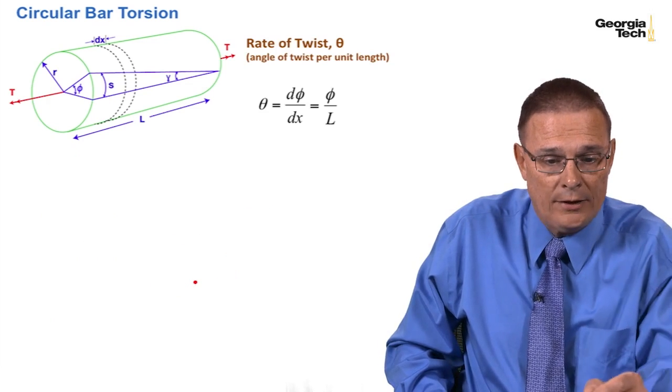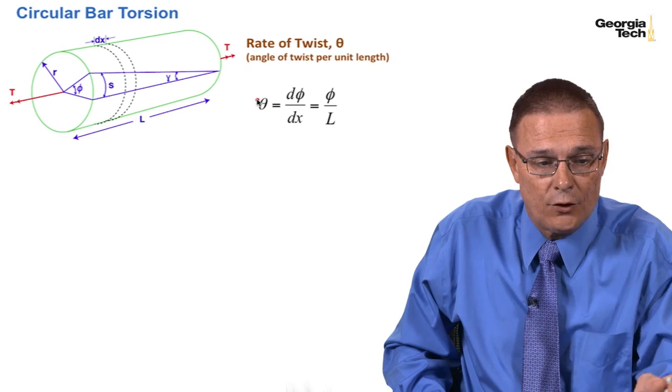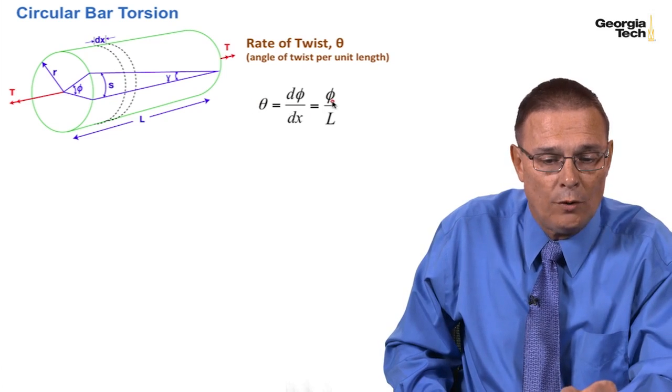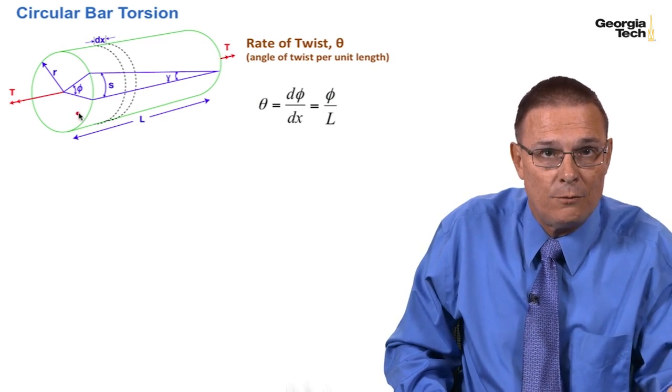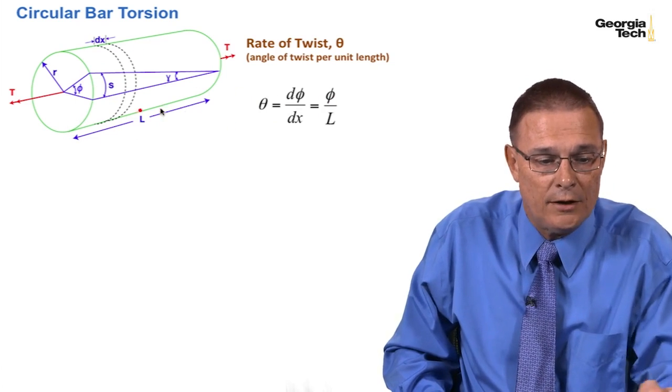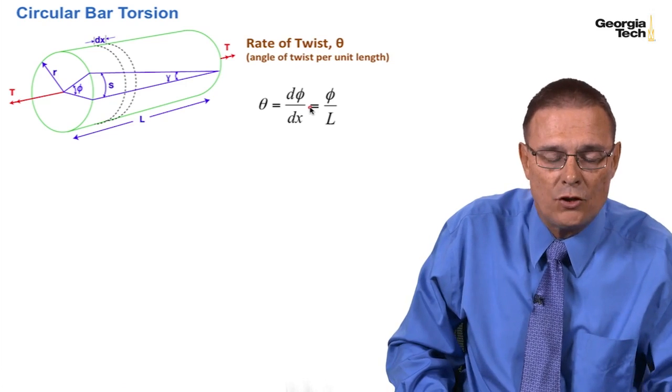And so now, instead of looking at d phi dx for a small element, the total phi for the entire engineering member here that I have shown is phi, the entire length is L, so same relationship.